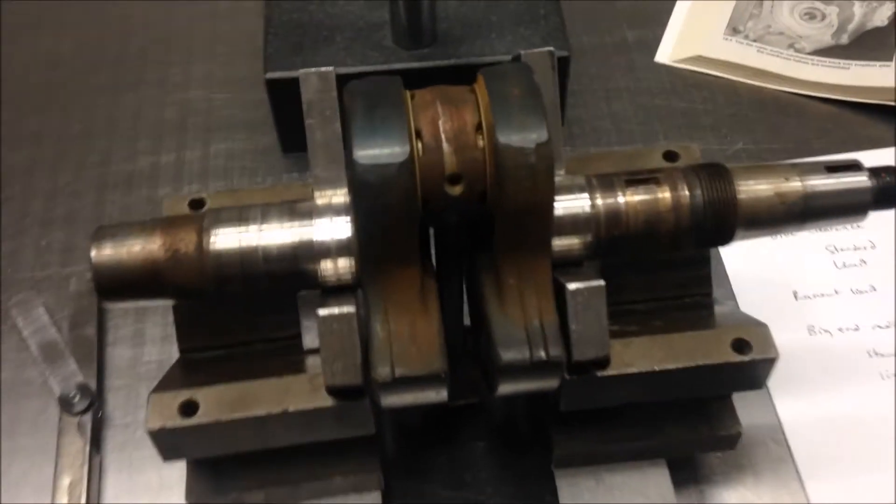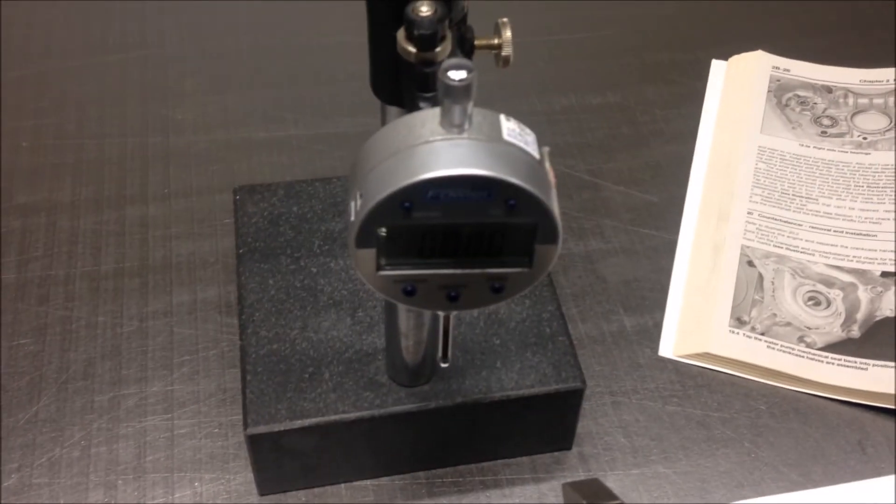Tools needed for this job are a set of V blocks, a feeler gauge, and a dial indicator.